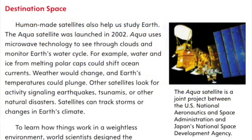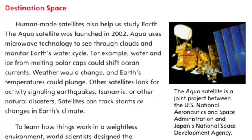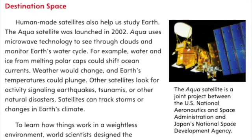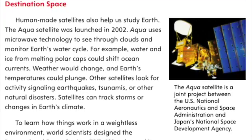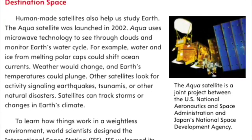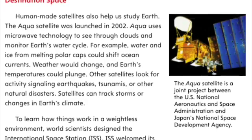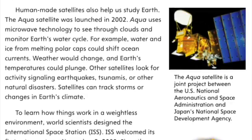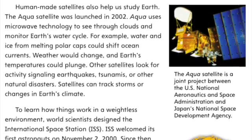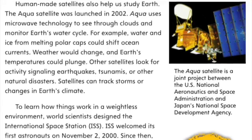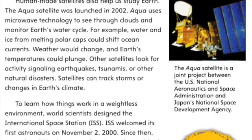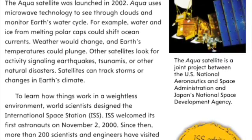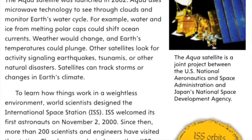Destination Space. Human-made satellites also help us study Earth. The Aqua satellite was launched in 2002. It uses microwave technology to see through clouds and monitor Earth's water cycle. For example, water and ice from melting polar caps could shift ocean currents, causing weather to change and Earth's temperatures to plunge. Other satellites look for activity signaling earthquakes, tsunamis, or other natural disasters, and can track storms or changes in Earth's climate.